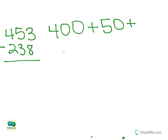And 3 is in the ones place, so its value is three ones, or three. Next, we expand 238 into 200 plus 30 plus 8.